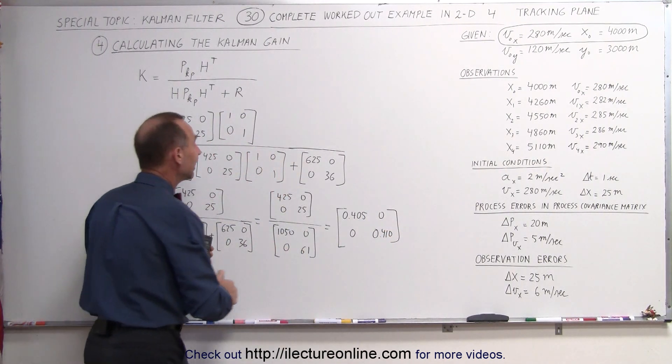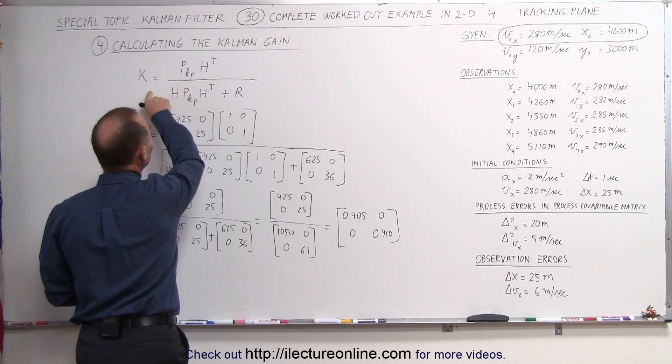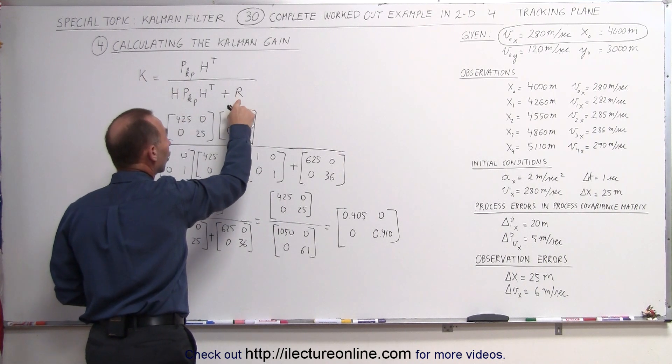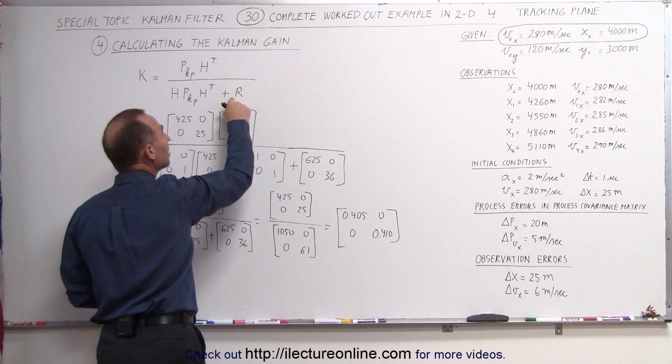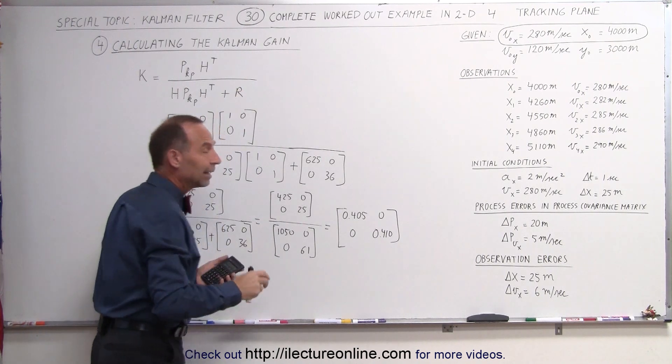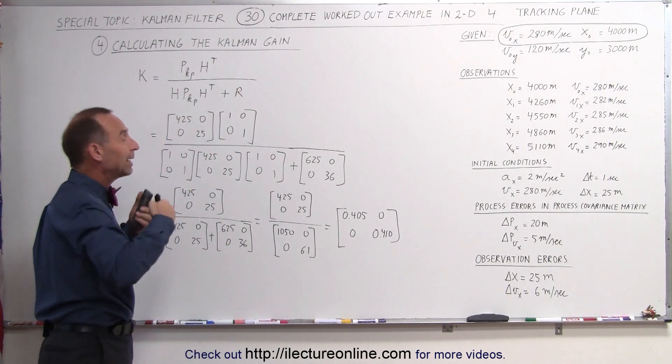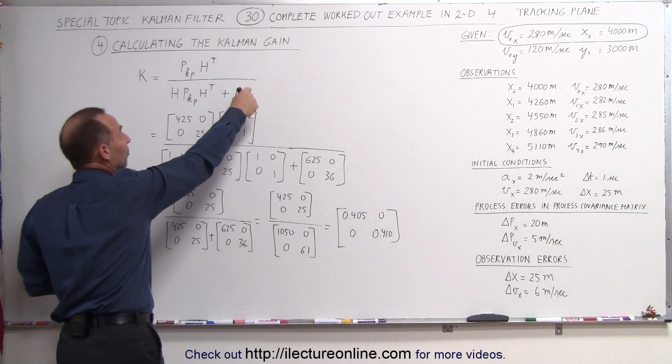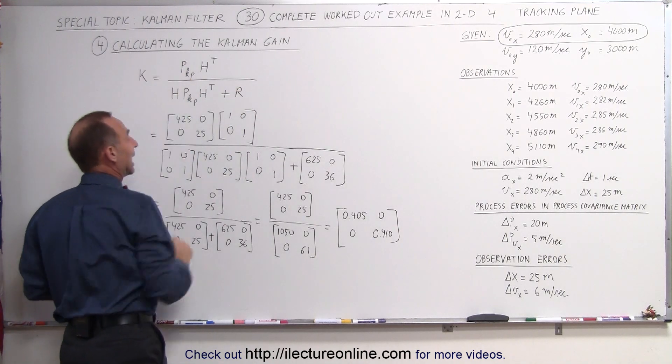Notice the bigger k is, the larger k is, that means the smaller r was, that means the smaller the error was or the uncertainty was in the measurement. The smaller k is, the bigger the error in the measurement, because the bigger r becomes, the smaller k becomes.